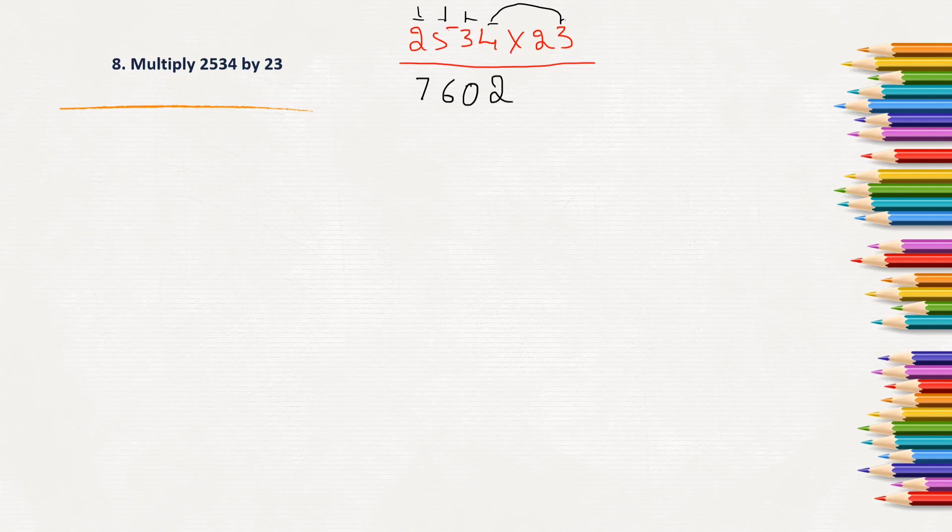Now, we have to multiply with 2 tens, right? So, here, ones place will leave as blank and then go on multiplying. 2 times 4 is 8, 2 times 3 is 6, and 2 times 5 is 10, 0, 1 carry. 2 times 2 is 4 plus 1, 5.